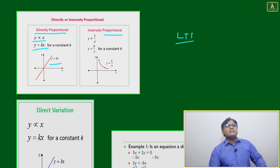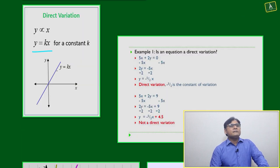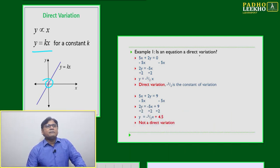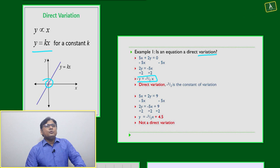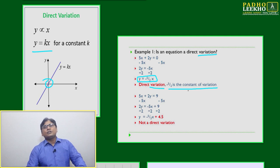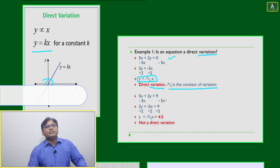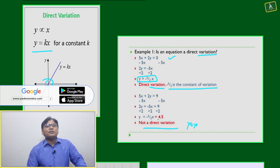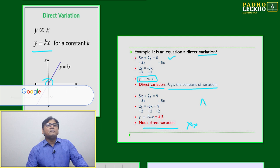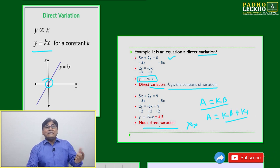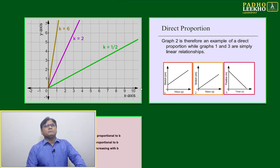Inversely proportional means y = k/x. For direct proportion, y = kx always passes through the origin. Example: is 5x + 2y = 0 a direct variation? Rearranging gives y = −(5/2)x, so yes — it is direct variation, with −5/2 as the constant of variation. But 5x + 2y = 9 is not direct variation, because it cannot be written as a = kb. It comes in the form a = kb + k1, making it linear but not direct variation.